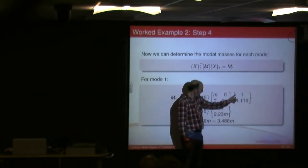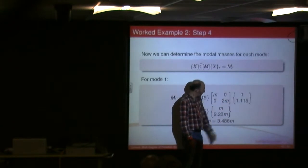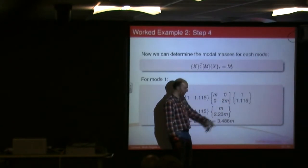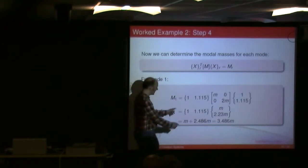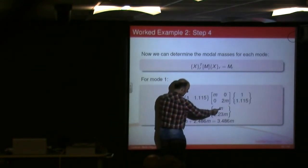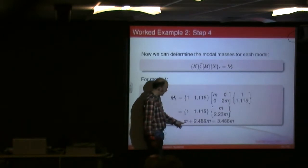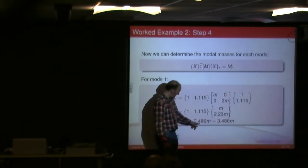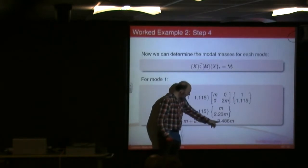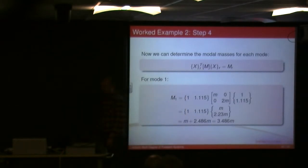And here I've got 0 times by 1 plus 2m times by 0.115. So obviously that's going to be 2.23m. And then obviously I take this equation, I do 1 times by m, which is here. And I do 1.115 times 2.23 times by m, which is this term. I add them together, I get 3.486m. That's my modal mass.